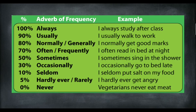Here is a note for you. You can choose from this list. If the percentage is 100% — you always do something — you use 'always.' If slightly less, about 90%, you can use 'usually.' If less again, use 'normally' or 'generally.' If only 70%, you can use 'often' or 'frequently.' For example: 'I often read in bed at night.'